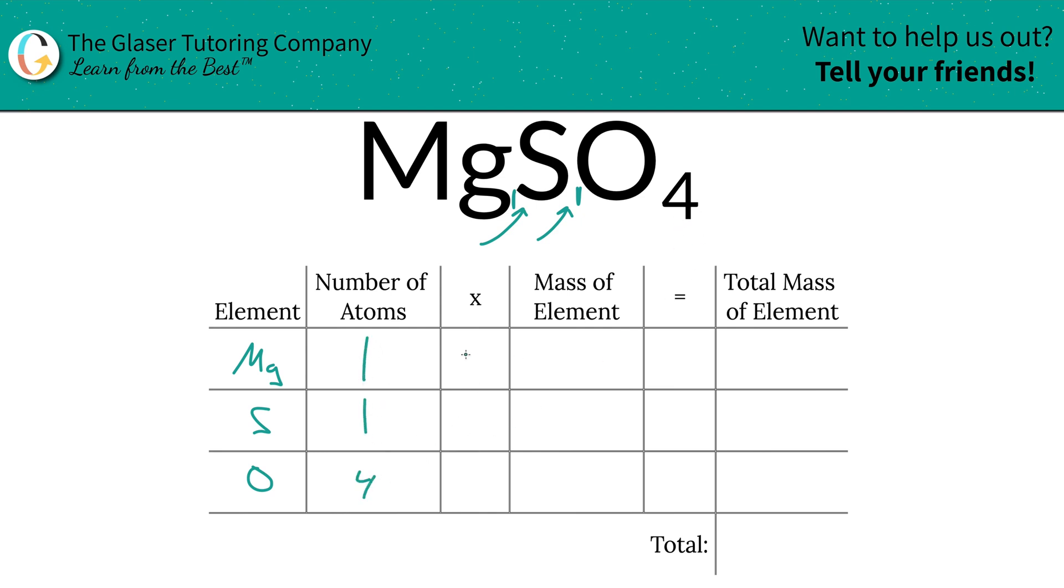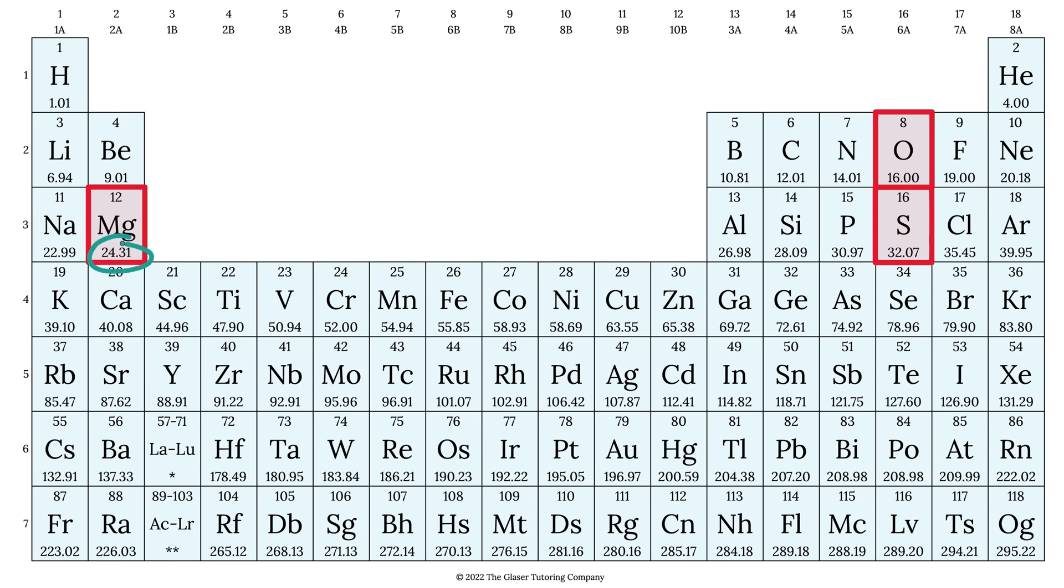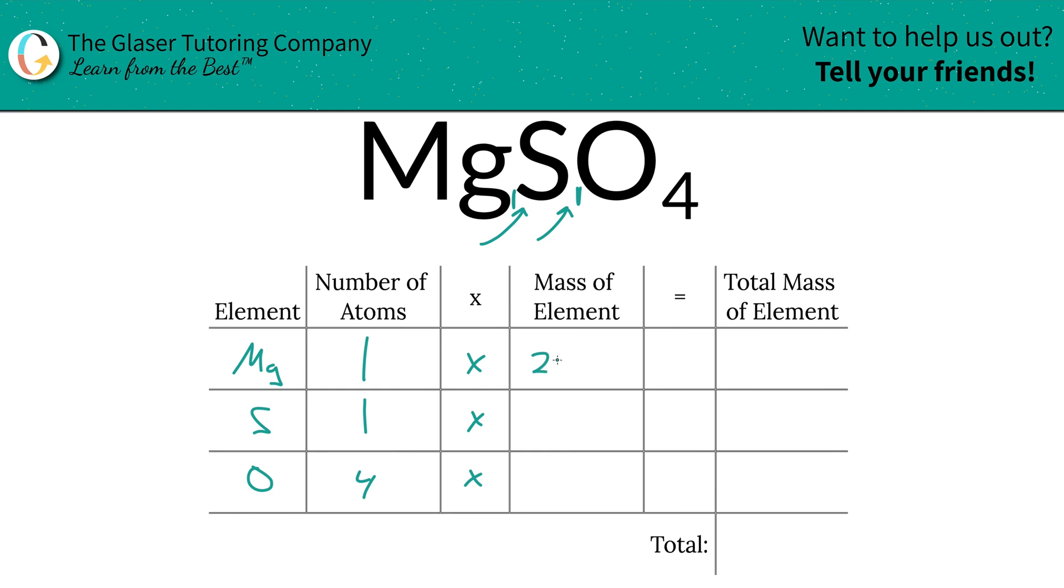Then you're going to take those number of atoms and multiply it by the mass of each element. These masses are always found on the periodic table. So let's take a look. Magnesium is 24.31, oxygen is 16, and sulfur is 32.07. So that's what we're going to be plugging in. We got 24.31, sulfur was 32.07, and then oxygen was 16.